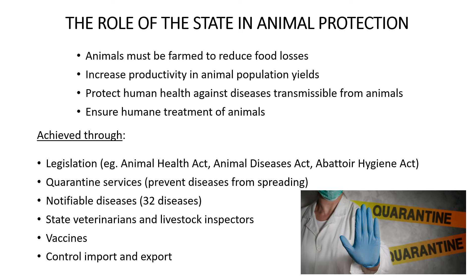How does the government actually achieve this? Through legislation — laws such as the Animal Health Act to make sure animals are healthy, the Animal Diseases Act to ensure zoonotic diseases do not spread, and the Abattoir Hygiene Act, meaning the areas where animals are handled should be sterilized and clean to prevent the spread of diseases and keep animals healthy.